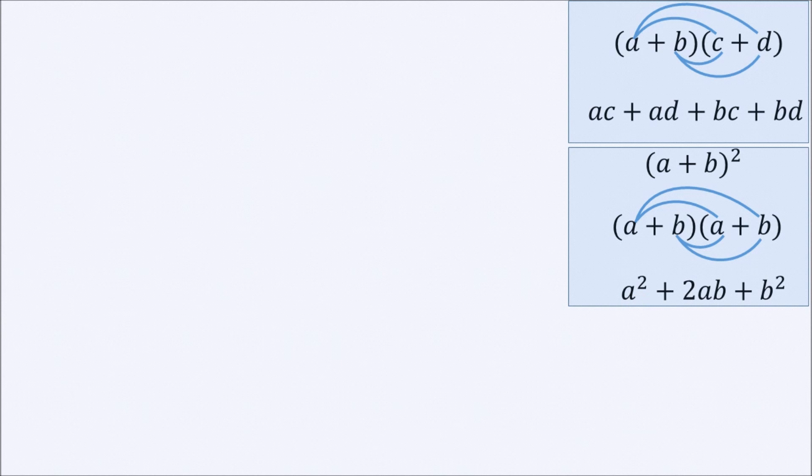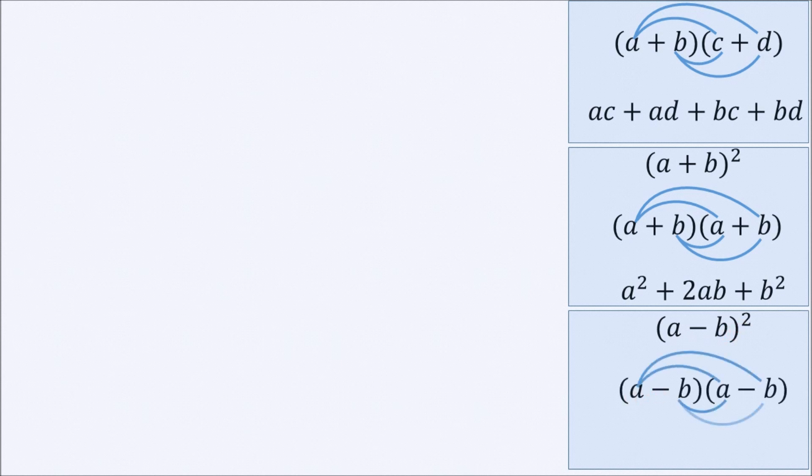If the squared bracket has a subtraction, such as this one, A minus B all squared, we do the same thing and end up with A squared minus 2AB plus B squared.